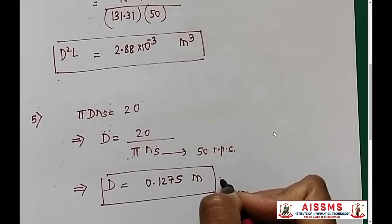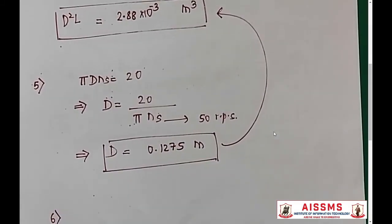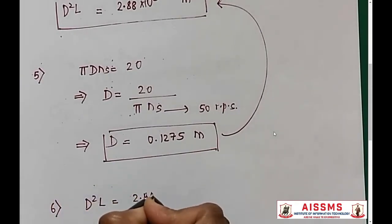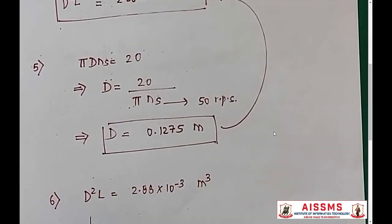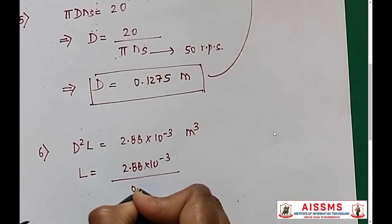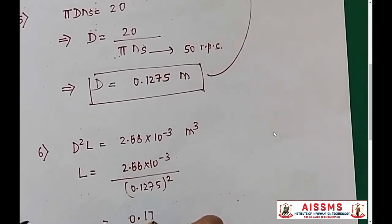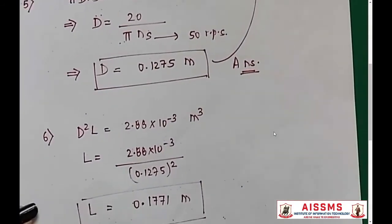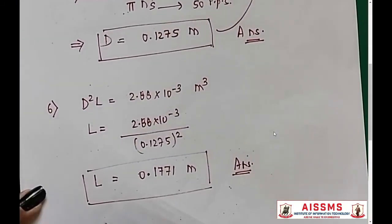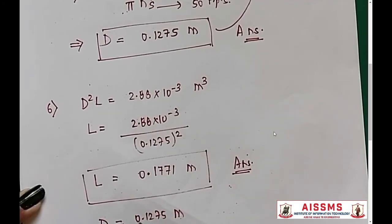Once we have calculated this, we can put the value of D in the earlier expression and get the value of capital L. We know that D²L is 2.88 times 10 raised to power minus 3 divided by 0.1275 whole square, which gives me the value of L as 0.1771 meters. This is one answer and the value of D is another answer.